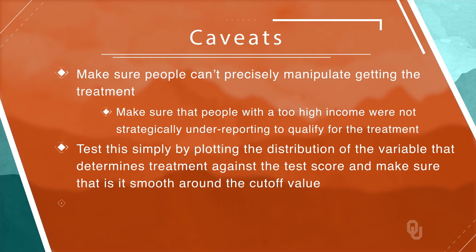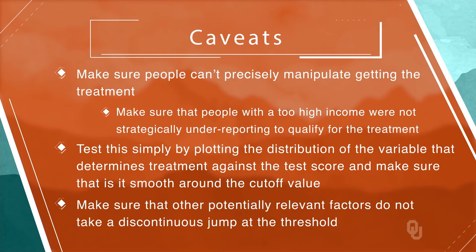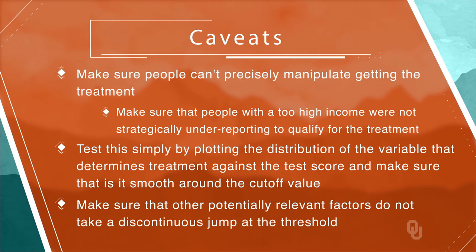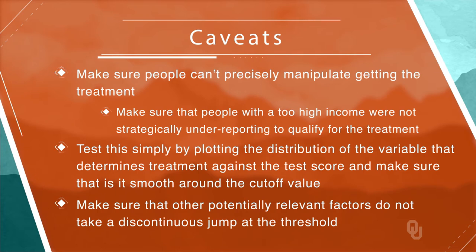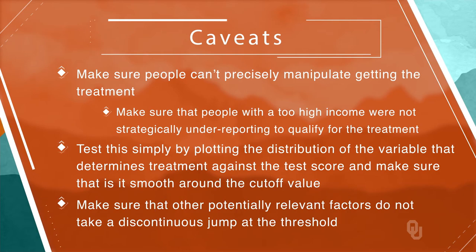In a similar way, we want to make sure that other potentially relevant factors do not take a discontinuous jump at the threshold. For example, if we graph parental income against PSAT score and it also jumped discontinuously at 1,400, then we would be worried that the effect on earnings could be partly due to parental income and not just to getting the scholarship. Again, we can test this by plotting the distribution of the potential confounding variable against the test score and making sure it is smooth around the cutoff value.